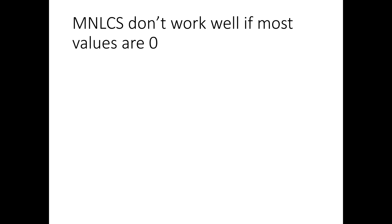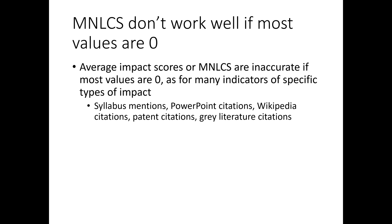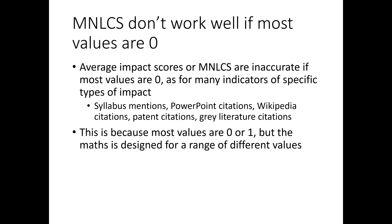The MNLCS scores don't work very well if most values are zero — that's the problem that leads to a separate formula. The MNLCS scores are inaccurate if most scores are zero, as they are for many indicators of specific types of impact. This is because the maths behind MNLCS is designed for a range of different values, whereas for these altmetrics most values will be just zero or one. So the maths isn't optimal for a set of numbers that are mostly zeros with a few ones included.